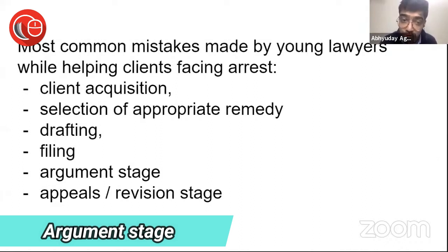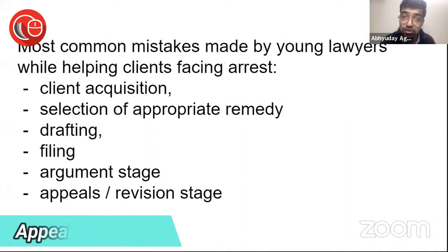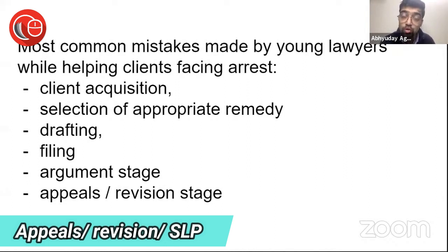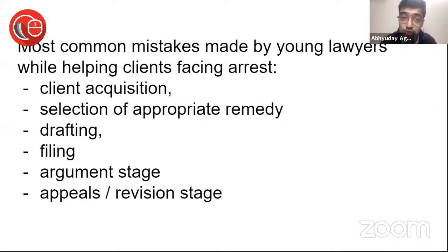Then there's the argument stage — if your argument doesn't happen properly, your drafting may be good but the relief is not there for the client. Sometimes you do everything right and the judge still gives you an adverse order. Then you want to go to appeal, revision, or against the revision you want to go to the Supreme Court for an SLP — a Special Leave Petition. That's what happened in Arnab Goswami's case. You need to know the whole chain, because one adverse judgment means you should be able to take the next action.